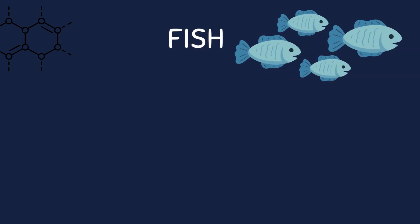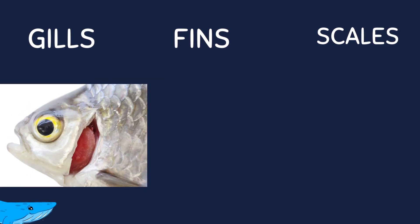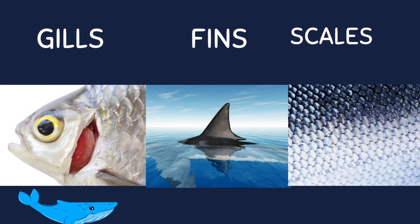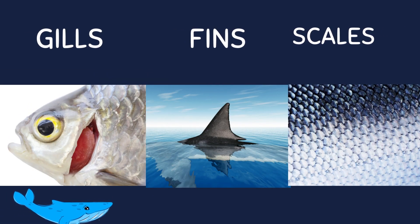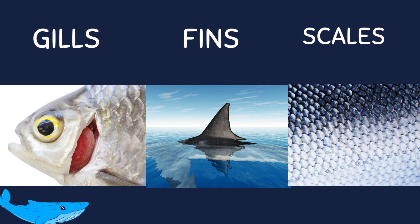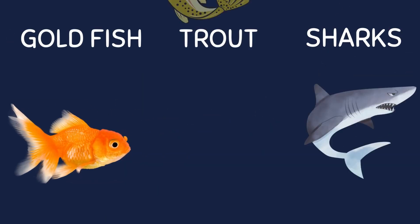Fish are aquatic animals that have gills, fins, and scales. They lay eggs and come in a variety of shapes and sizes. Some common examples of fish include goldfish, trout, and piranhas.